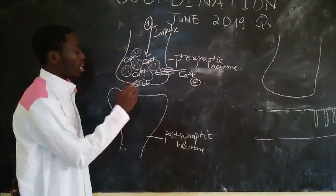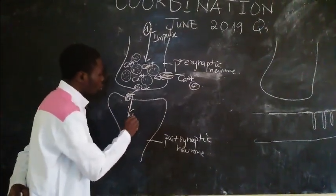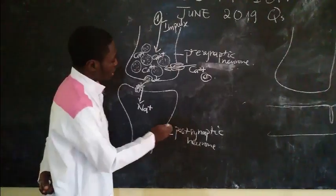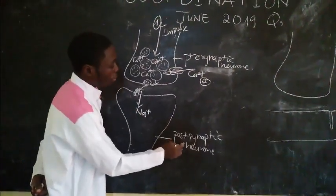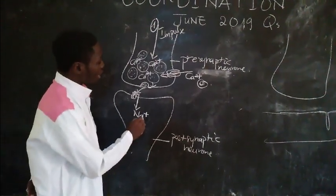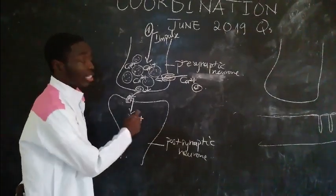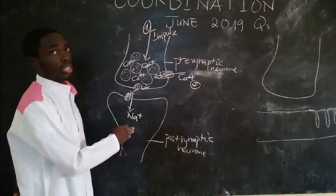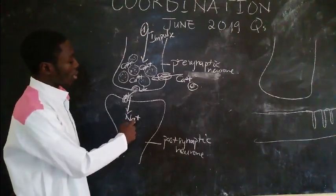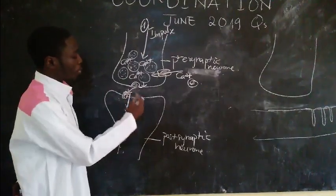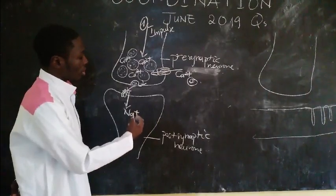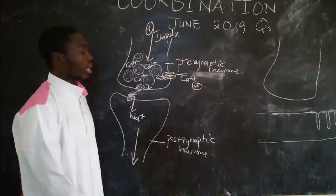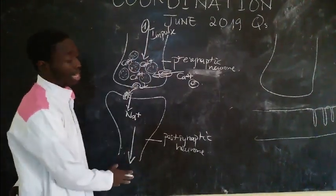When the ligand-gated sodium channels open, there is an influx of Na+ into the postsynaptic neuron through the postsynaptic membrane. This increased concentration of Na+ causes depolarization in the postsynaptic neuron, generating an excitatory postsynaptic potential, which ultimately generates an action potential that is transmitted along the postsynaptic neuron. The action potential has been transferred from the presynaptic to the postsynaptic neuron.